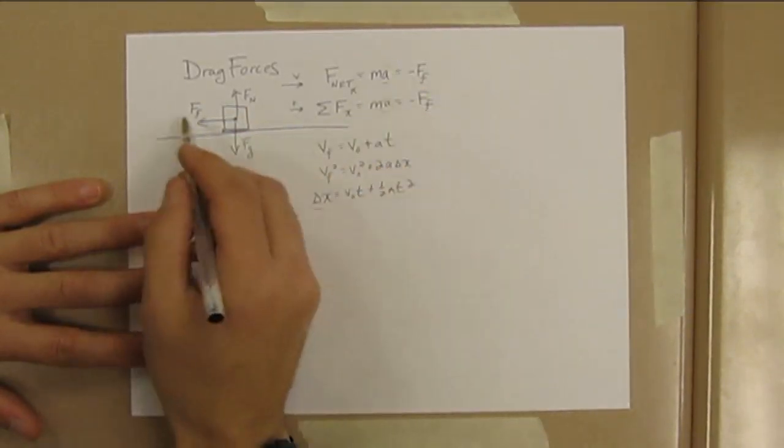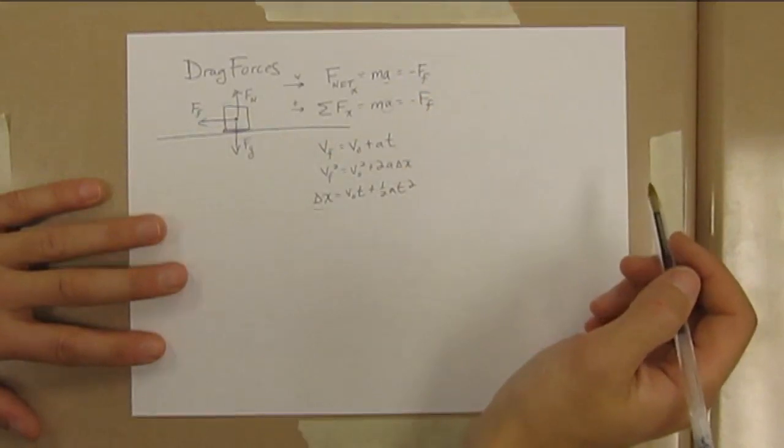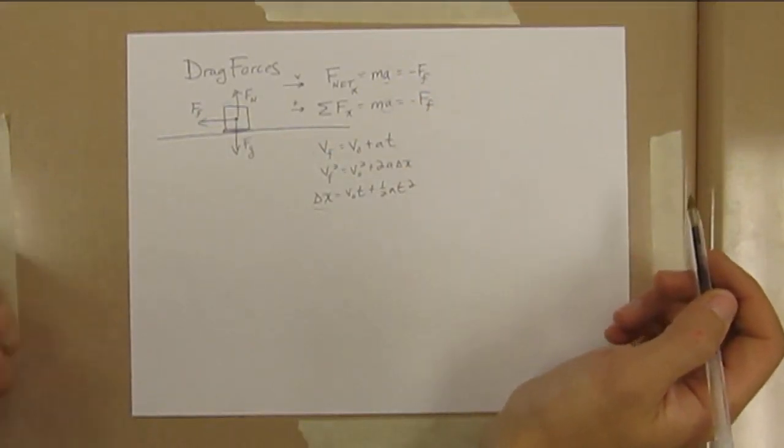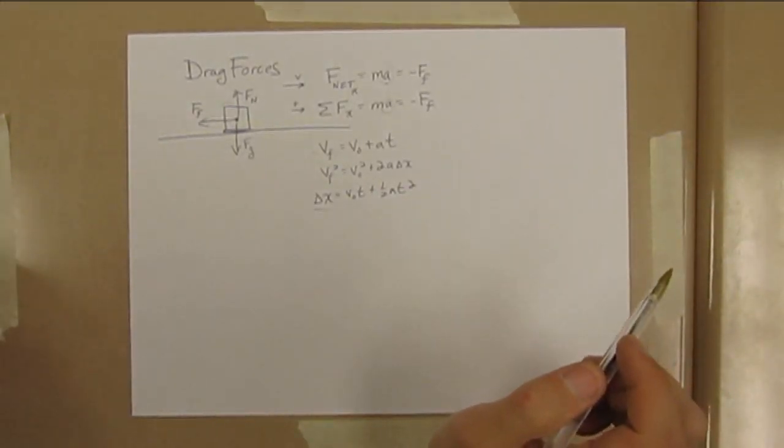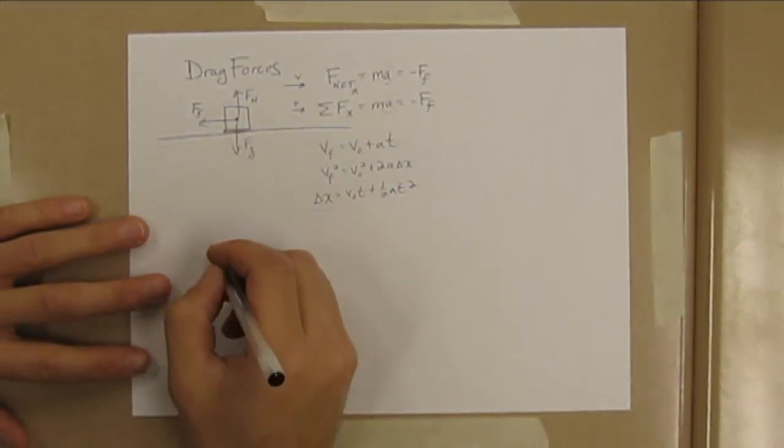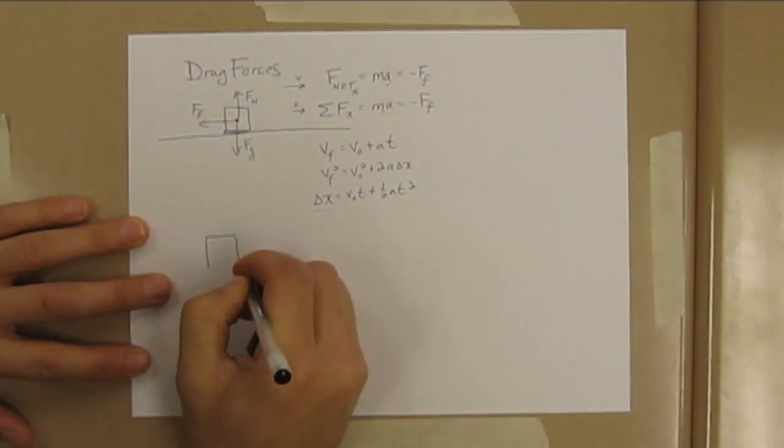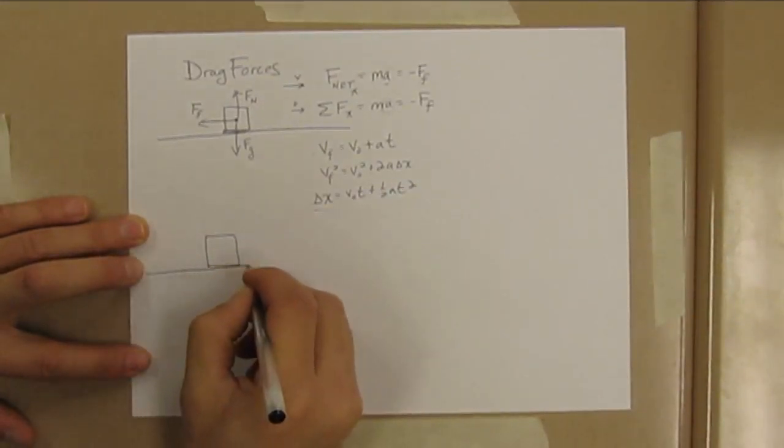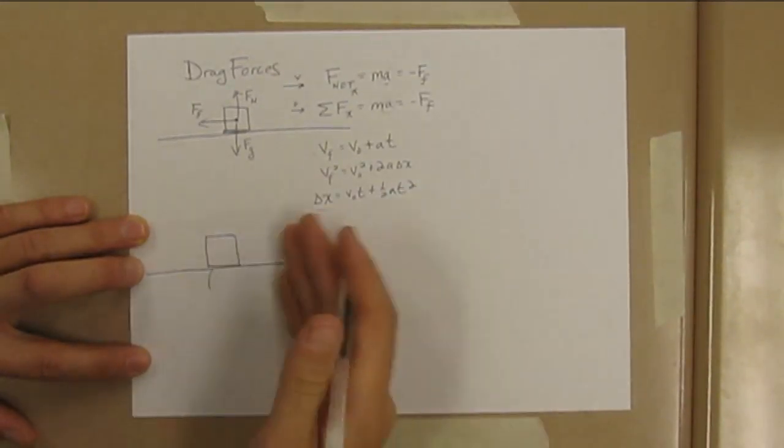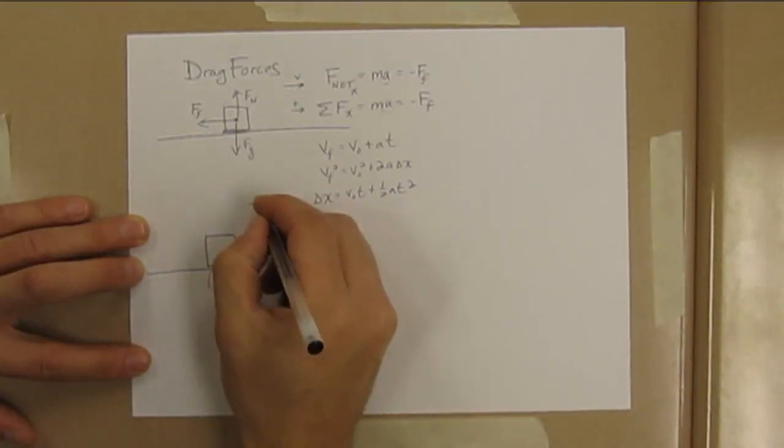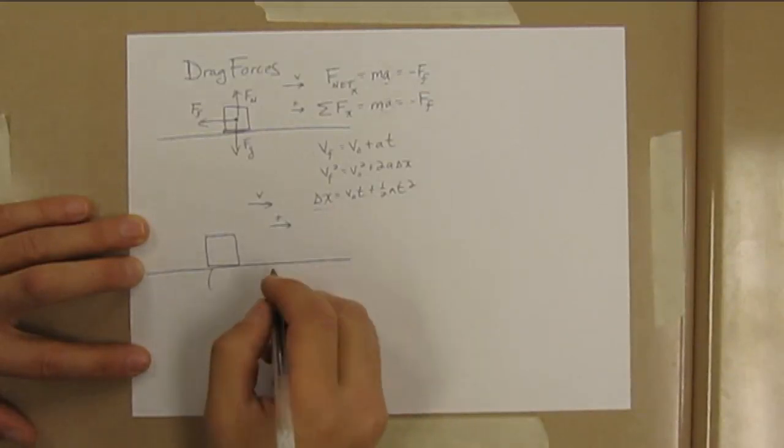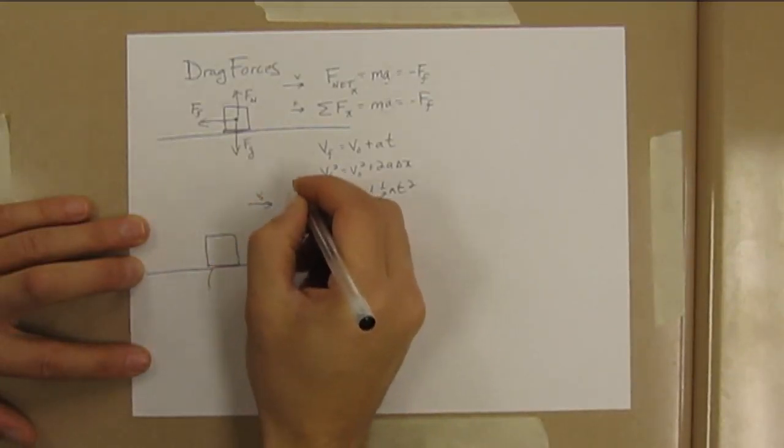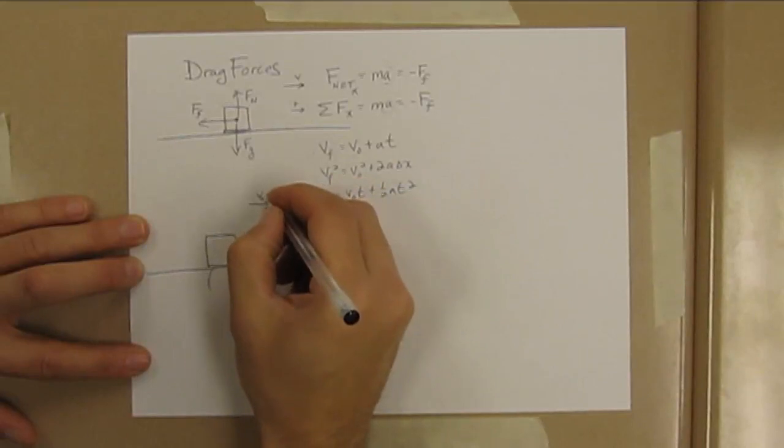But the problem is: what if the force itself is changing? There are drag forces that are like that. Now let's say instead of having a frictional force, let's say this is on ice or something like that. It's got some velocity to the right. We'll call to the right positive, so it's got some initial velocity—something for the initial velocity.